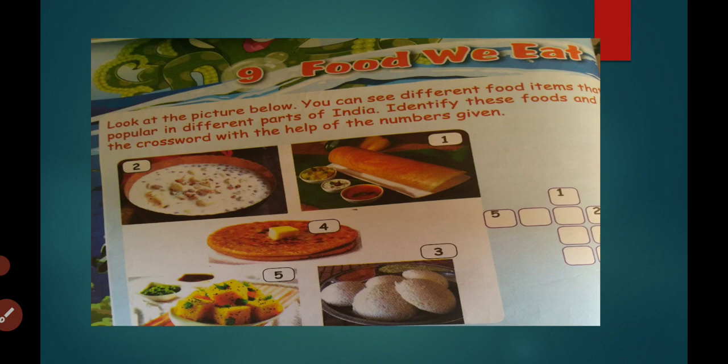What do we eat? All of you look at the picture below and identify these food items. Number 1: dosa. Number 2: kheer. Number 3: idli. Number 4: paratha. Number 5: dhokla. These are the food items we eat. We like to eat these food items.